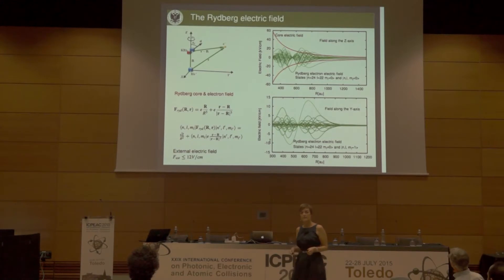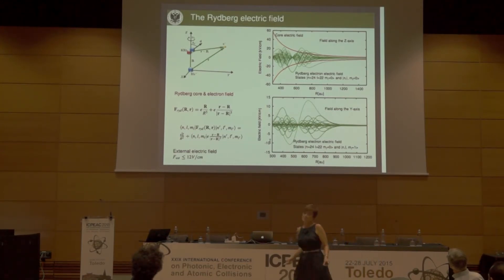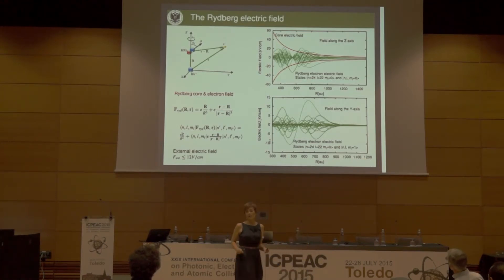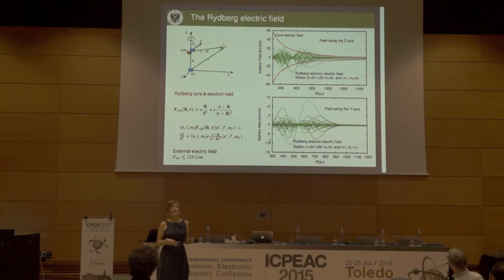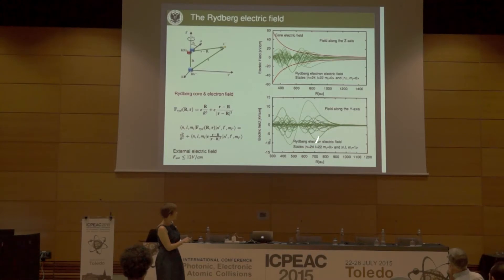I wanted to show you this picture because it is very informative to see how strong the electric field is that the diatomic molecule experiences. This is the electric field along the z-axis as a function of the internuclear distance. In red is the electric field from the core, shown in both directions for comparison — around 20 kilovolts per centimeter, which is very strong and hard to produce in a laboratory. The green oscillating curves are the electric field along the z-axis, for the example of N equals 24 and L equals 22 mixed with other NL Rydberg states. Along the y and x axes, we also have a strong field on the order of 10 kilovolts per centimeter.